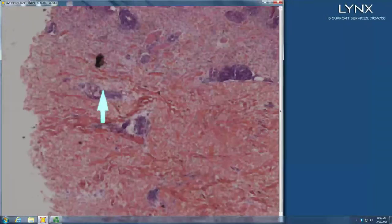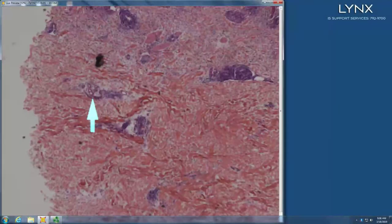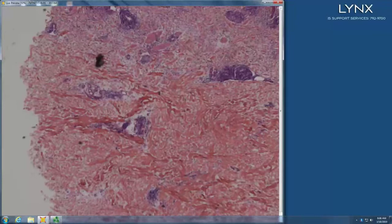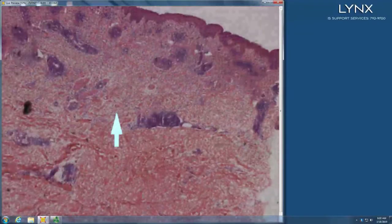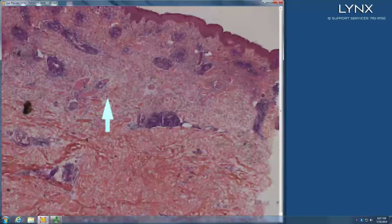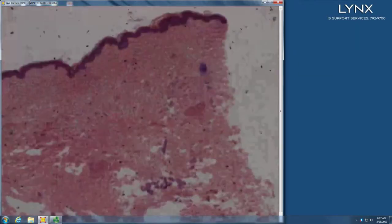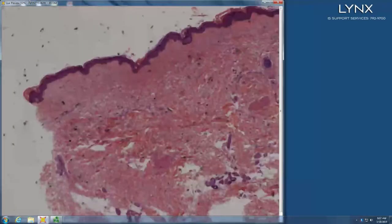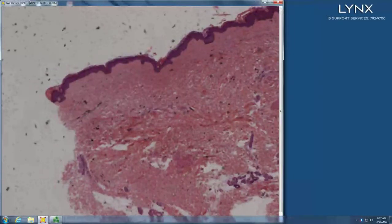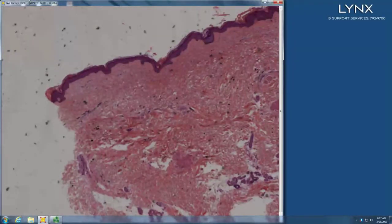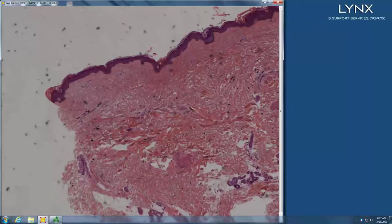So we've got some perivascular periadnexal. Perivascular periadnexal, some limbs in the eccrine coil, superficial and deep, lupus. And why is there so much space between the collagen bundles? There's a lot of mucin. There's mucin in there, so you are correct. Lupus. You are the queen of lupus this morning, so you get to hit the easy button. Thanks, Katie. That was easy.